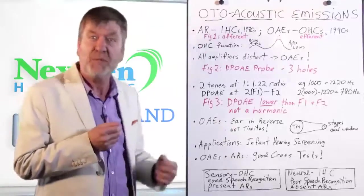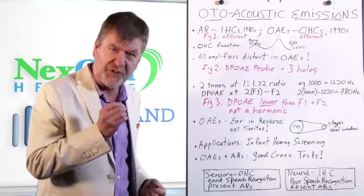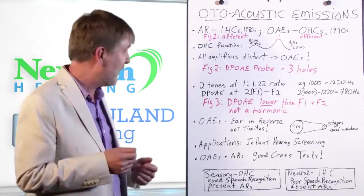The inner hair cells speak to the brain. They send information to the brain. The outer hair cells take info from the low brain stem and serve in a more efferent, motoric type of function. Well, otoacoustic emissions is specifically a test of outer hair cell function, whereas the acoustic reflex can be thought of as a test of inner hair cell function.